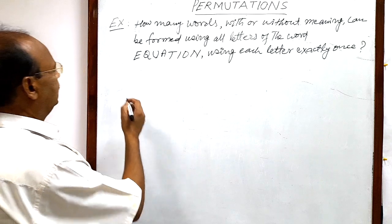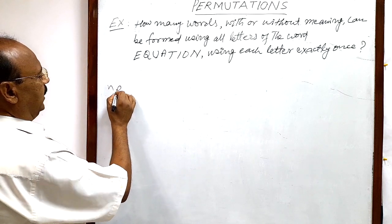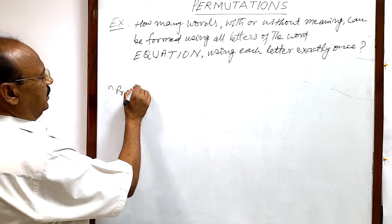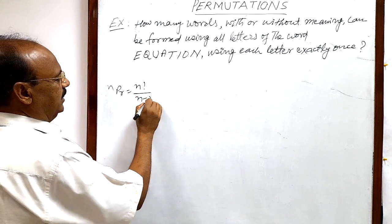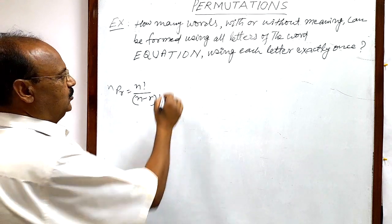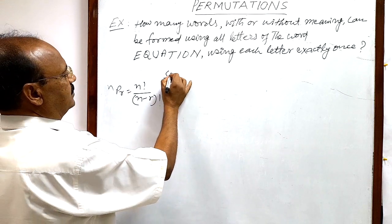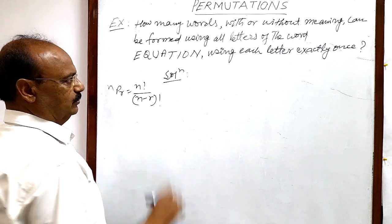We will use the formula: nPr is equal to n factorial divided by (n minus r) factorial. Now let us see the solution.